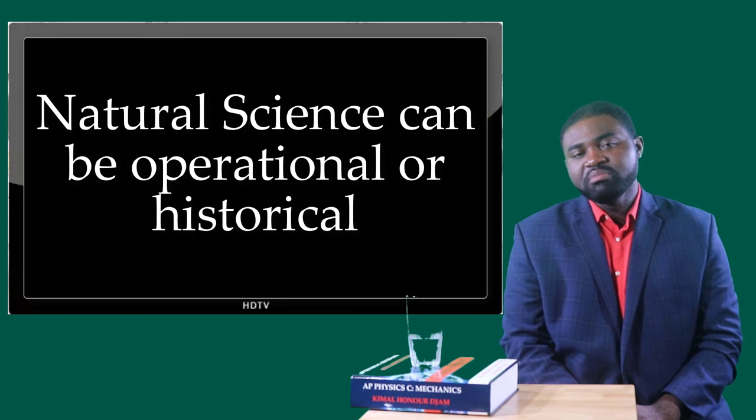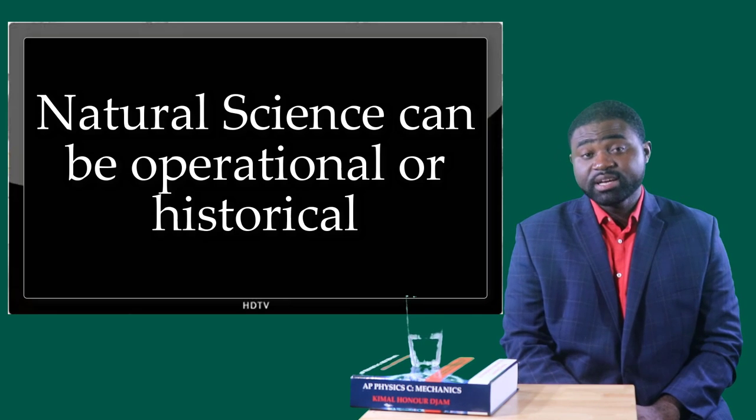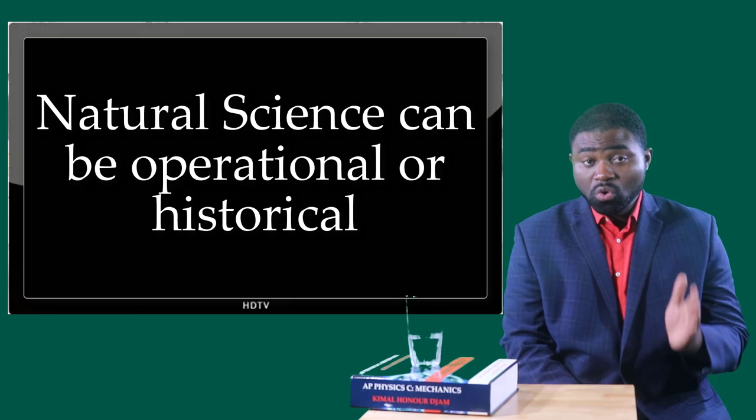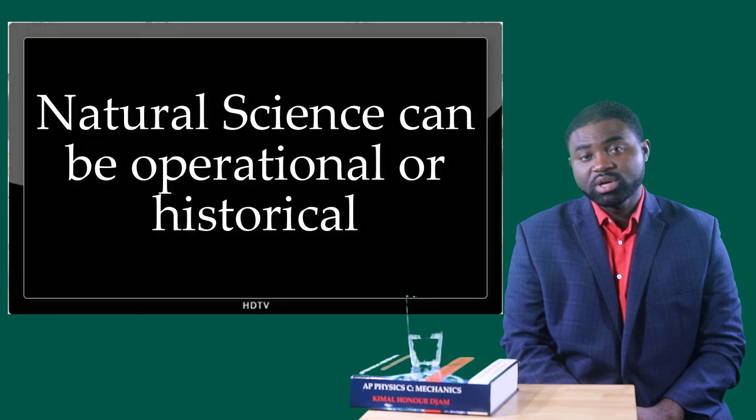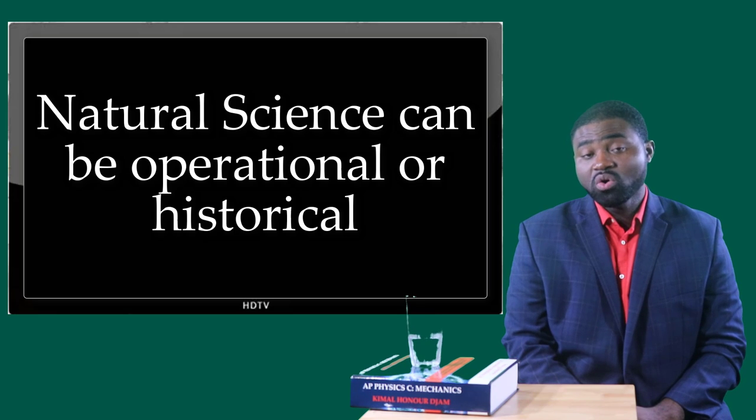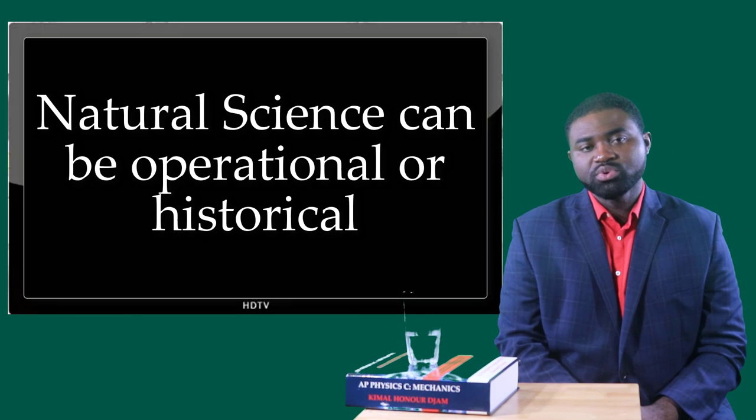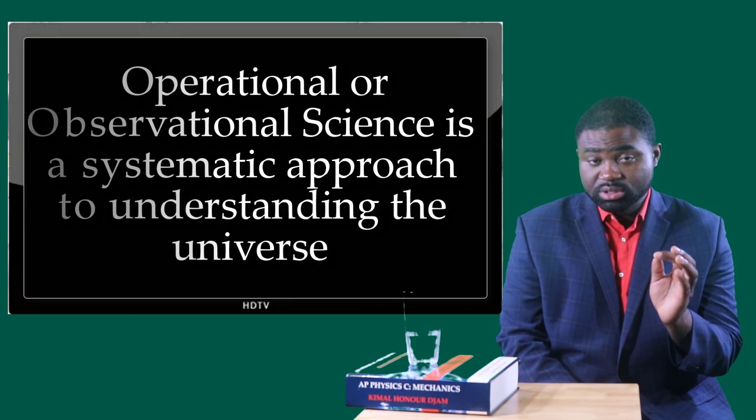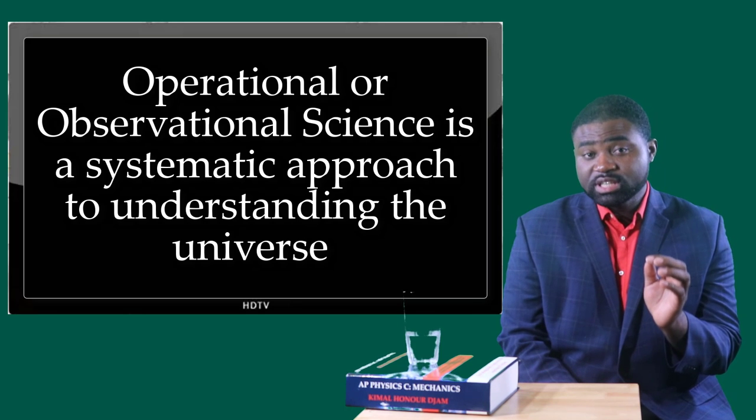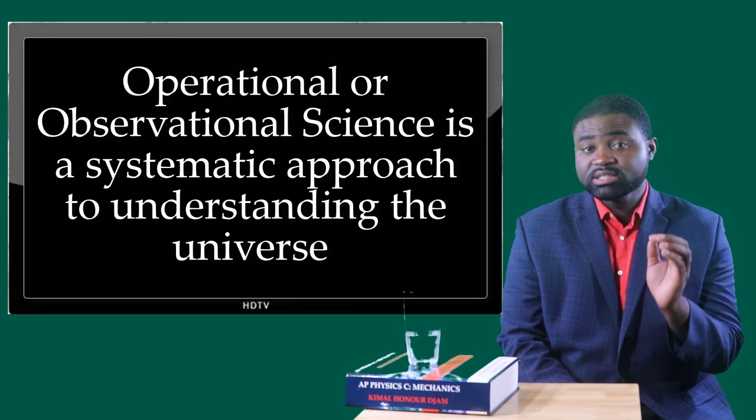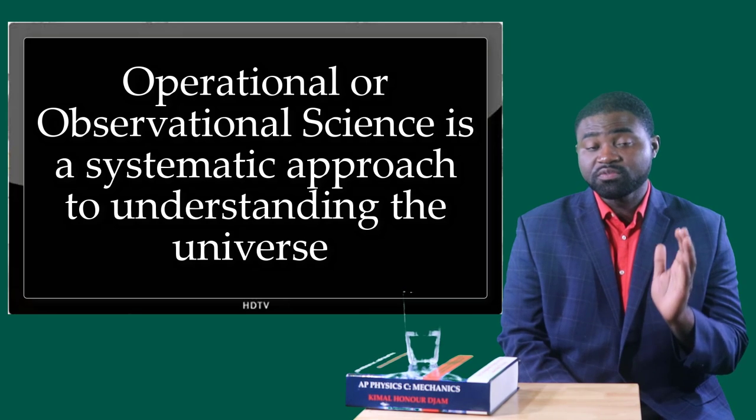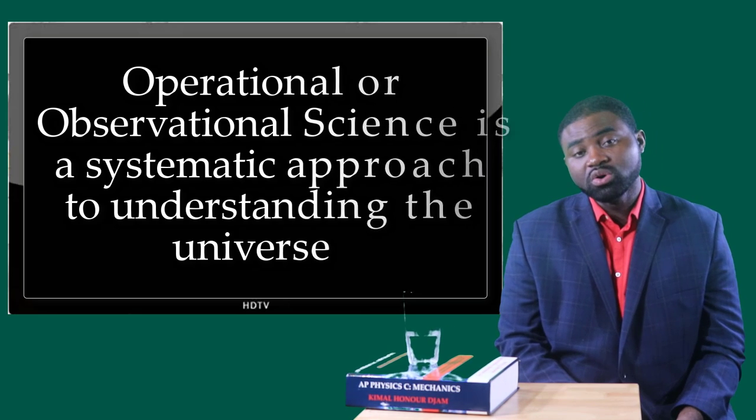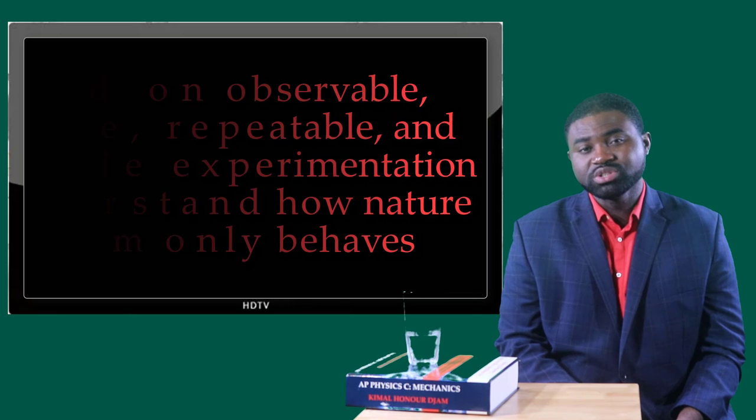What you need to bear in mind is that science can both be operational as well as historical. Operational or observational science is a systematic approach to understanding the universe based, and this is important, on observable, testable, repeatable, and falsifiable experimentation to understand how the universe works.